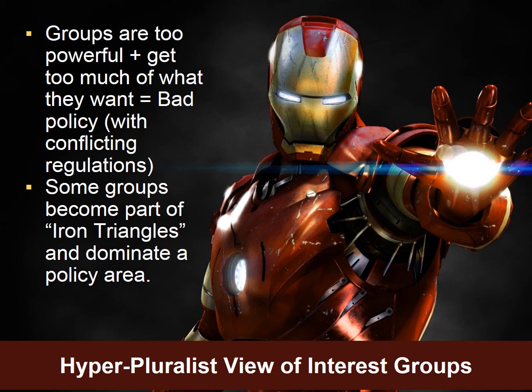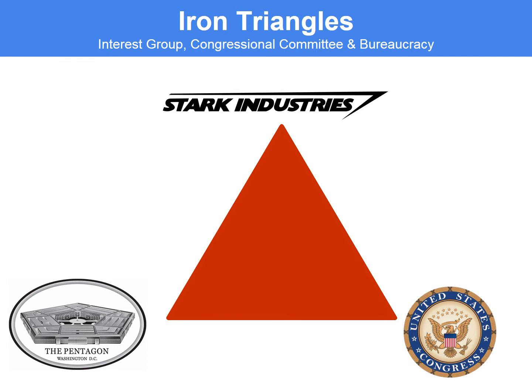Also, some groups become part of what we call iron triangles, and they totally dominate a policy area. Iron triangles are essentially the policymaking relationship between congressional committees, the bureaucracy who make regulations, and interest groups.